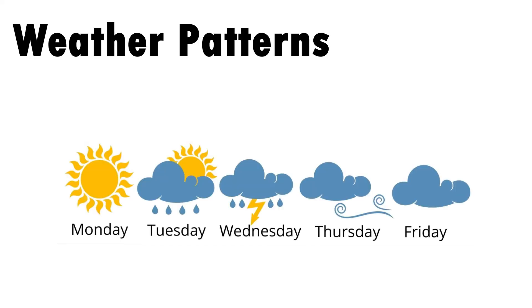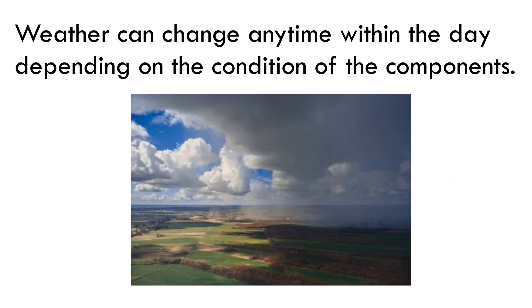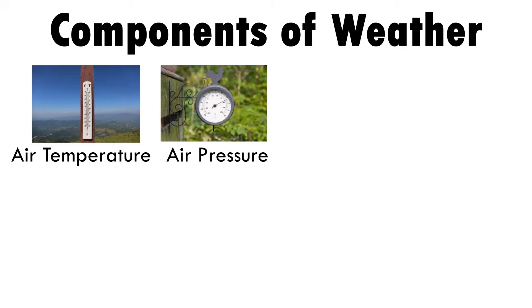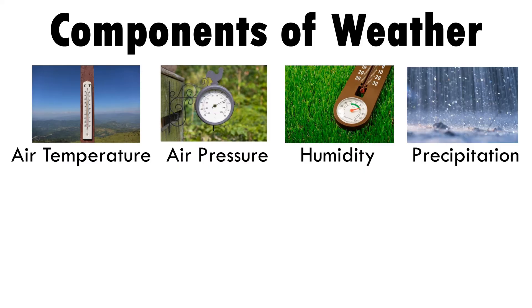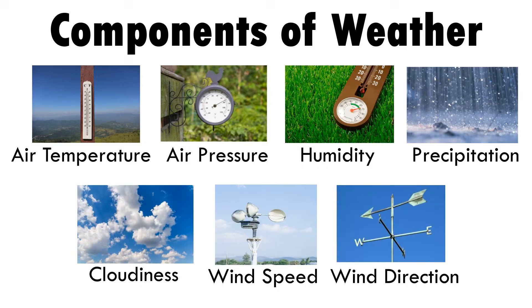Weather patterns occur when the weather maintains consistency for a period of time. Weather can change any time within the day depending on the condition of its components. The components of weather include air temperature, air pressure, humidity, precipitation, cloudiness, wind speed, and wind direction.